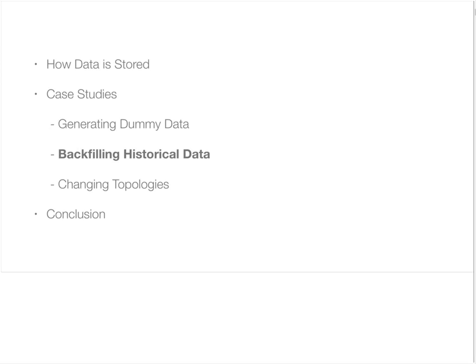Now we're going to look at backfilling historical data. When we have the backfill problem, companies have datasets from years of being in business and they want to move this into Cassandra to make it searchable and have all the data available to their application. One problem they run into is that they can't put the data through their application logic — it would simply take too much time, and in many cases it's just not necessary. You can move over your data and write it directly to an SSTable.